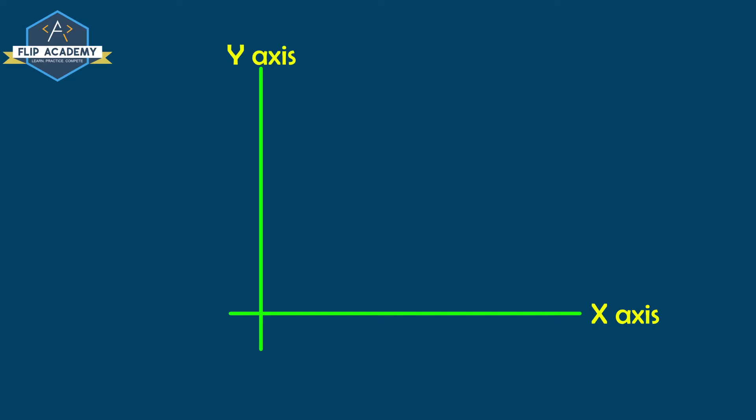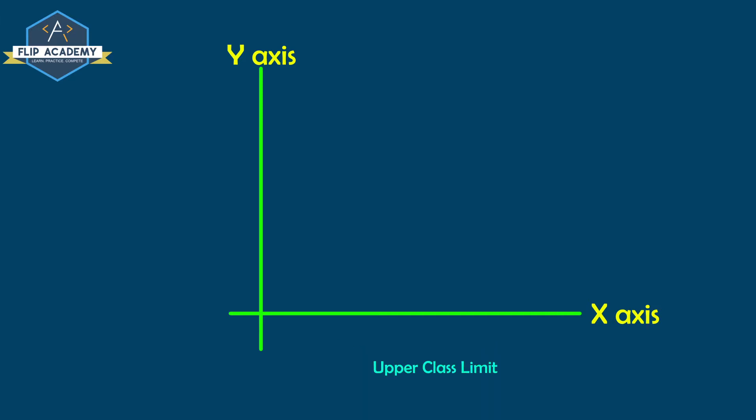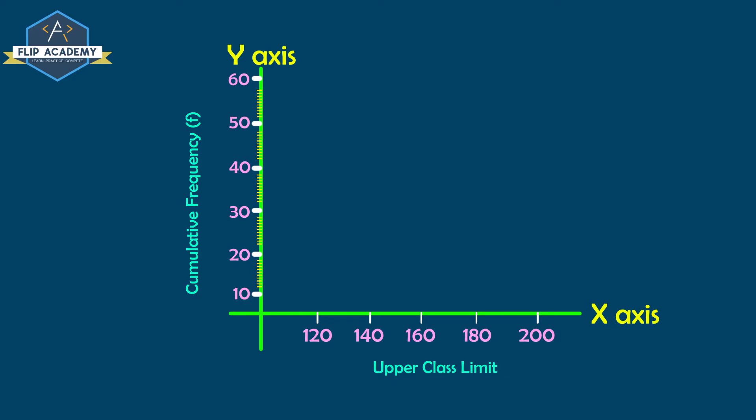On the x-axis we mention daily income in rupees (upper class limit), and on the y-axis we represent cumulative frequency and number of workers. Now we plot the points: first point is (120, 12).